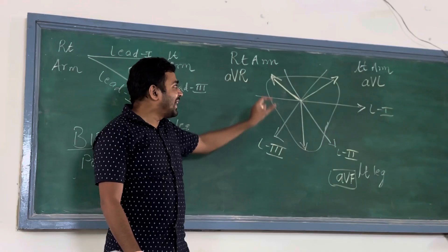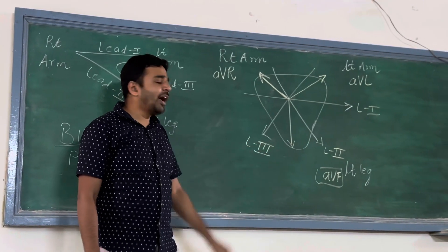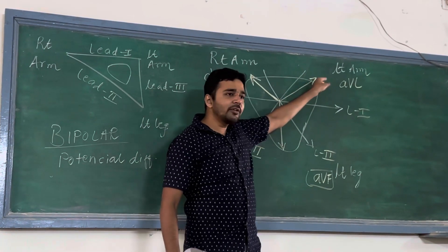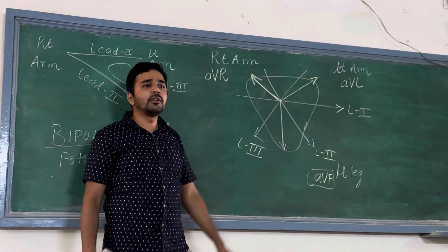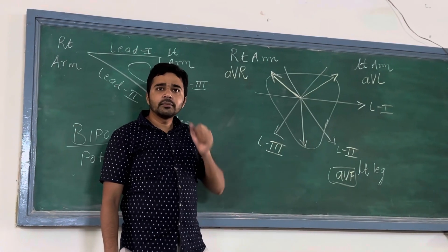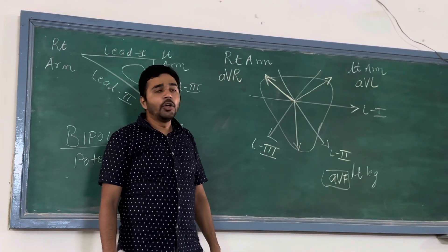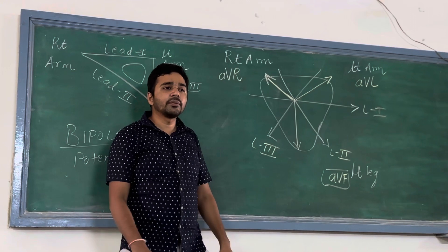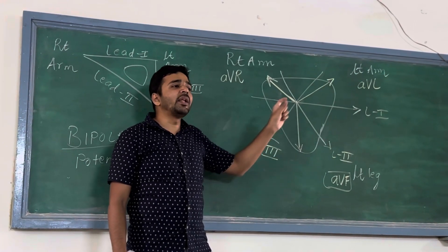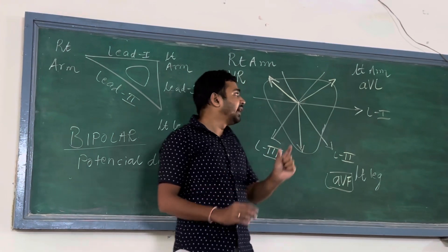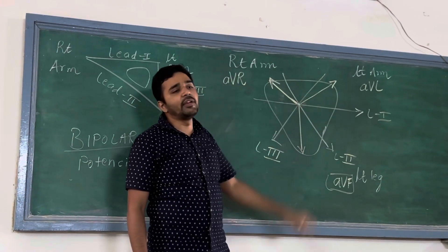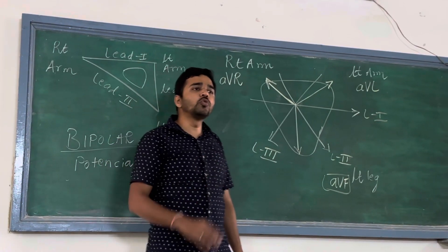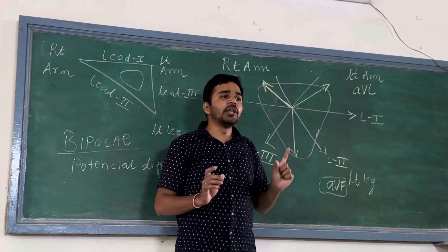AVR will not provide any specific information. AVL gives information about the lateral wall. AVF gives information about the inferior wall. So Lead 1 and AVL give lateral wall information, while leads 2, 3 and AVF give inferior wall information.